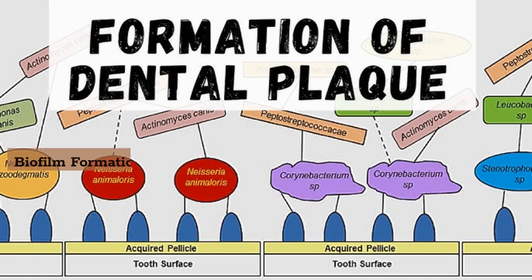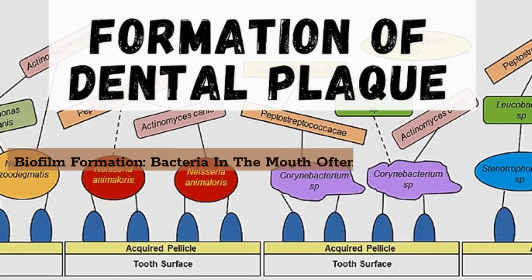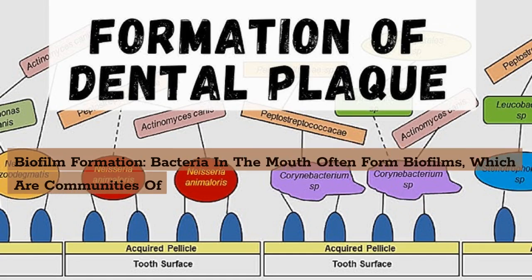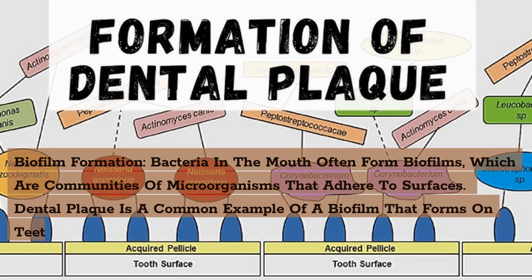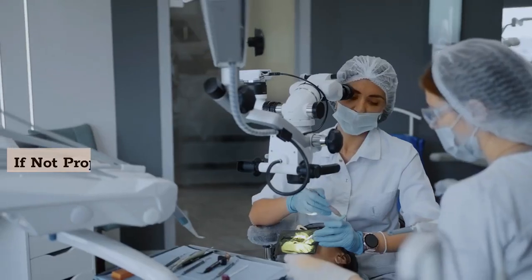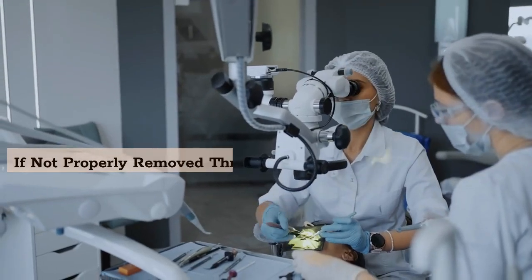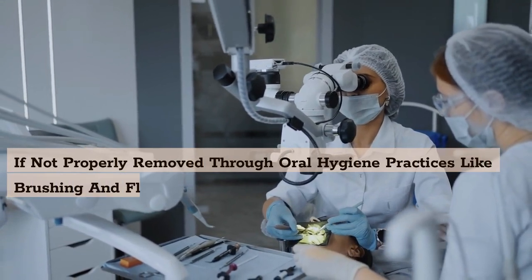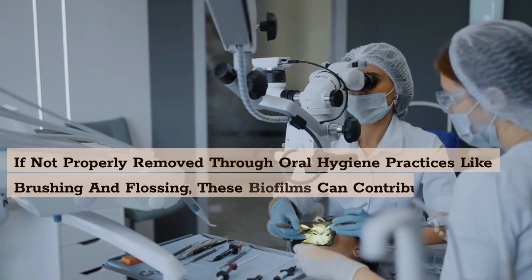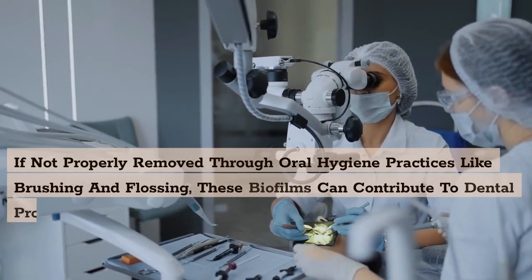Bacteria in the mouth often form biofilms, which are communities of microorganisms that adhere to surfaces. Dental plaque is a common example of a biofilm that forms on teeth. If not properly removed through oral hygiene practices like brushing and flossing, these biofilms can contribute to dental problems.